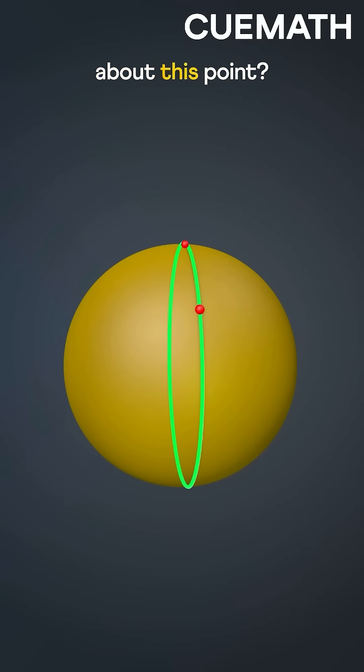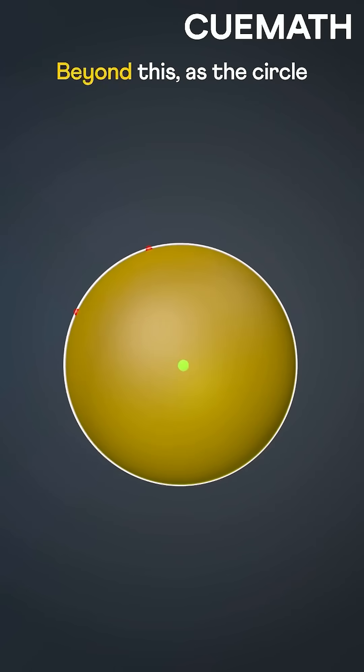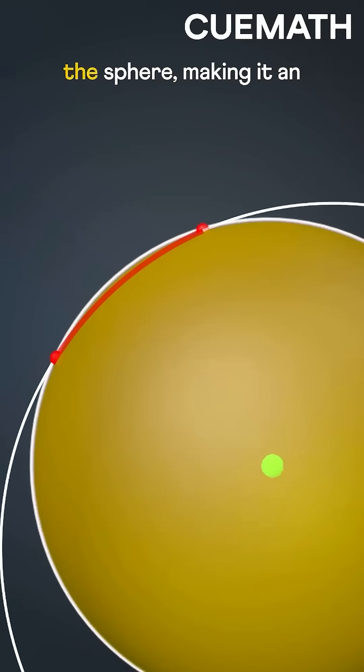What's special about this point? The center of the circle and the sphere are the same. Beyond this, as the circle grows larger, it dips below the sphere, making it an invalid path for the ant.